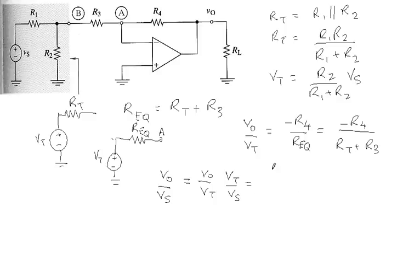Substituting from what we found earlier of V0 over VT, that gives minus R4 divided by RT plus R3.